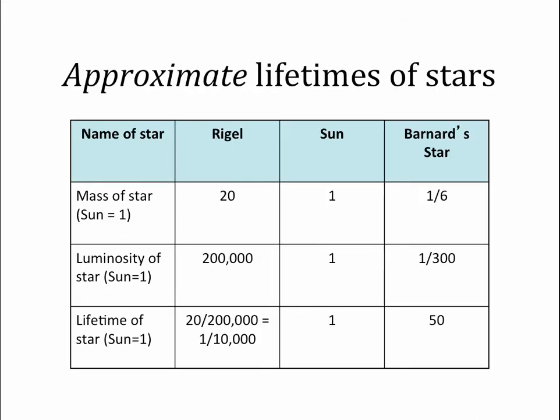Let's start by looking at the sun. We know the sun will live about 10 billion years — that's what models say. Let's call the mass of the sun 1, the luminosity of the sun 1, and its lifetime 1, even though we know it's 10 billion years. Doing this allows us to reference other stars to the sun.